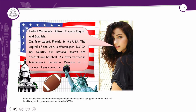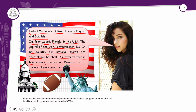Temos um pequeno texto onde a moça se chama Alison. Ela fala: 'Olá, meu nome é Alison. Eu falo inglês e espanhol. Eu sou de Miami, Flórida, nos Estados Unidos. A capital dos Estados Unidos é Washington D.C. In my country, our national sports are football and baseball. Our favorite food is hamburgers. Leonardo DiCaprio is a famous American actor.' Ela fala várias situações sobre o country dela, com figuras relacionadas ao país.